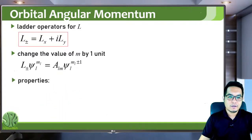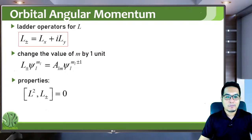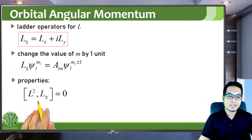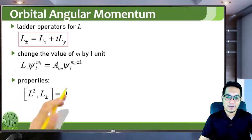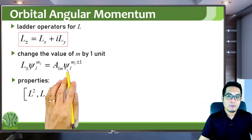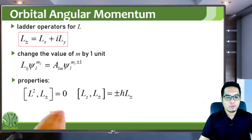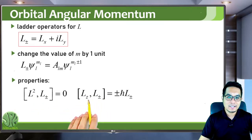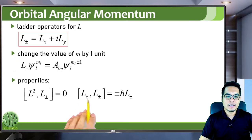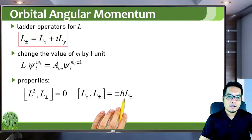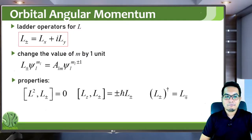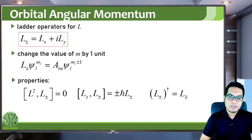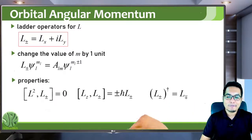The ladder operators commute with the square of the total angular momentum. I want to emphasize that this doesn't necessarily mean they share the same eigenfunction. In fact, the ladder operators don't have an eigenvalue equation because they always change the wave function. So they commute with L² but they don't commute with Lz. The commutation relation of Lz and L-plus or minus is plus or minus h-bar times L-plus or minus. And the adjoint of the raising operator is the lowering operator, and vice versa.